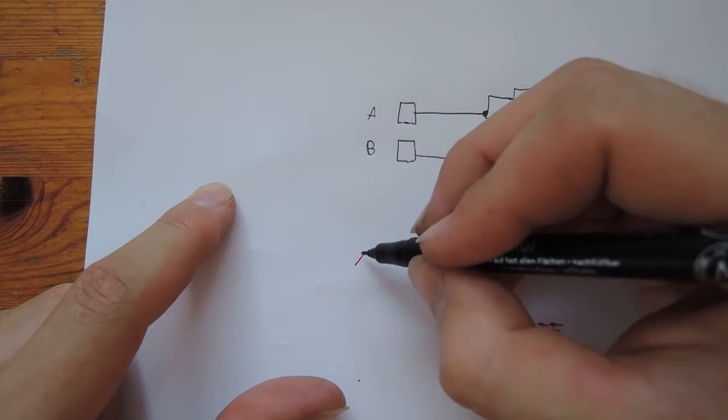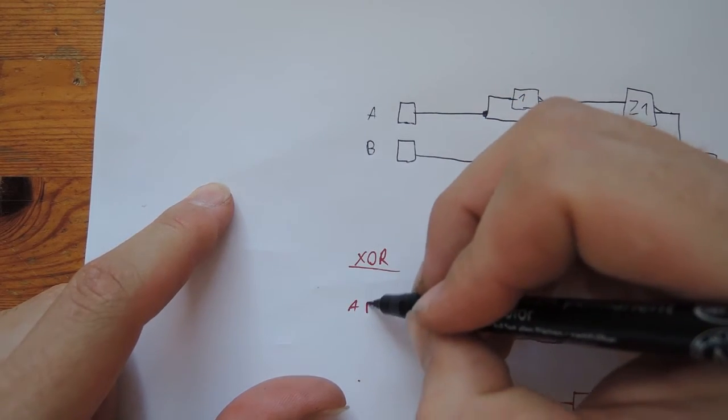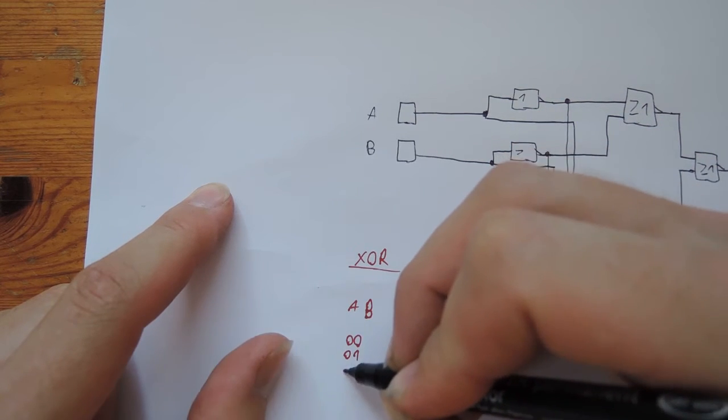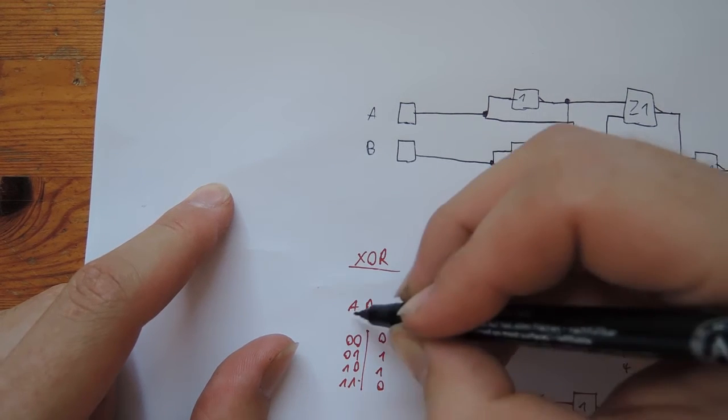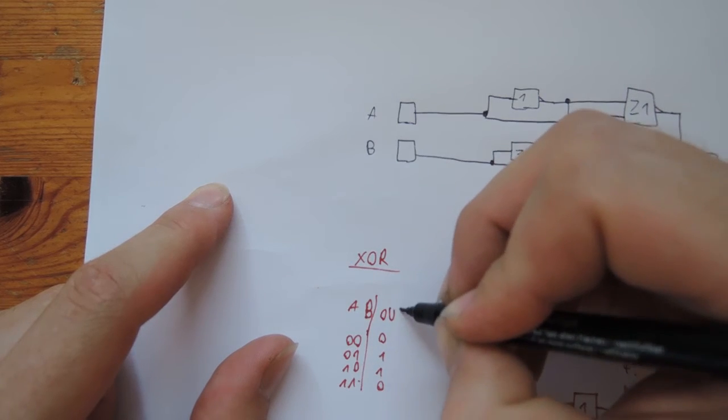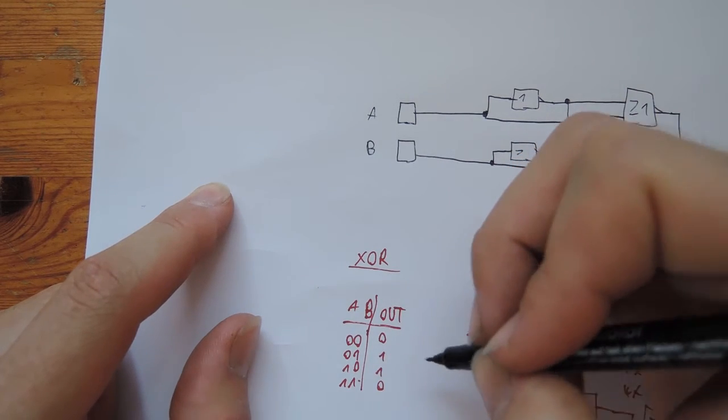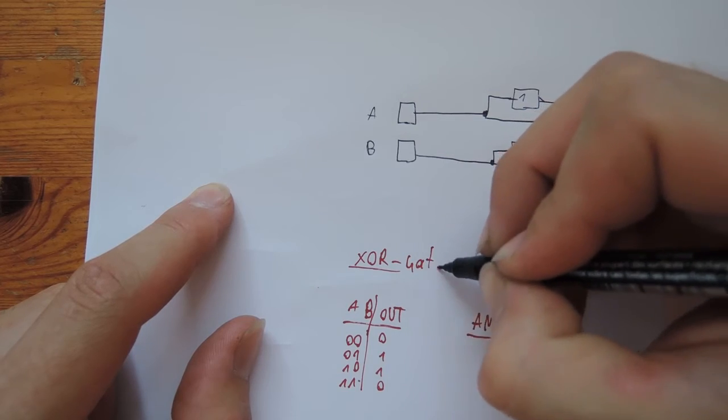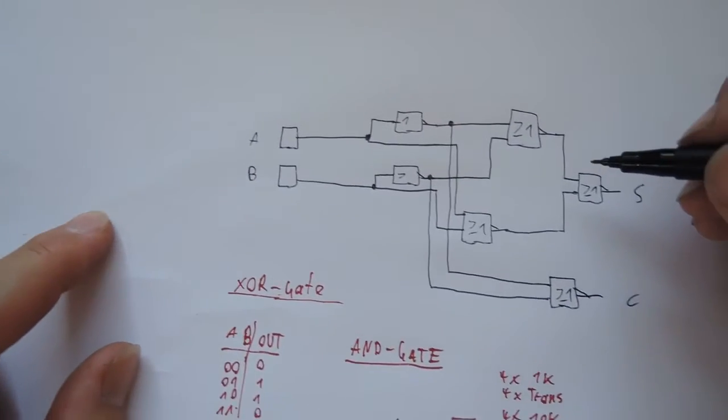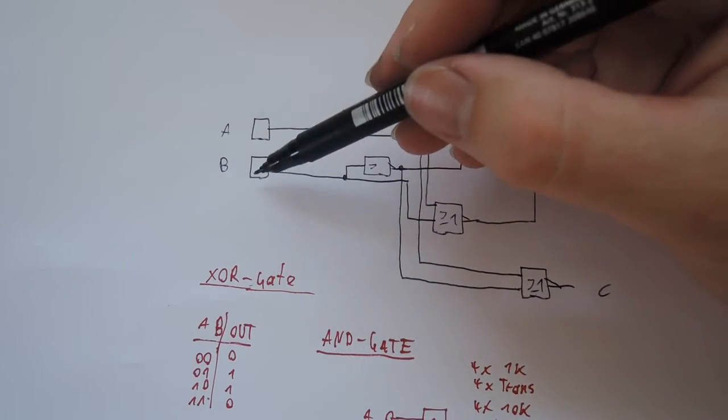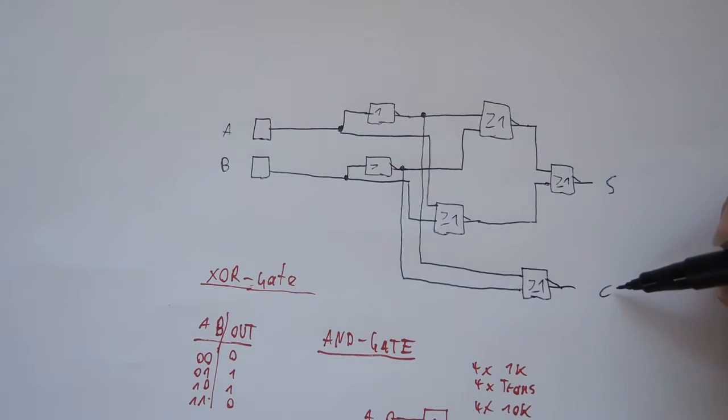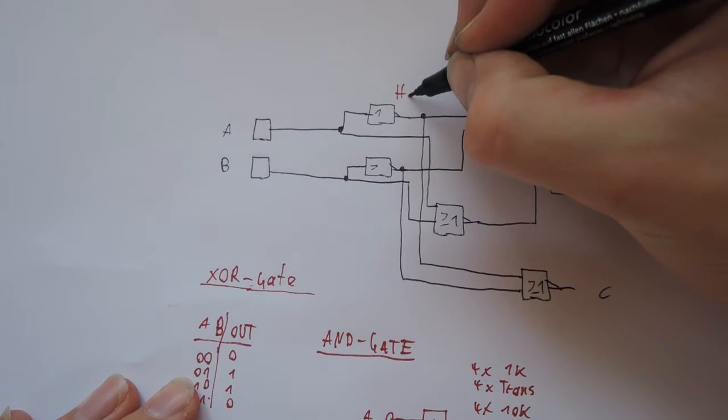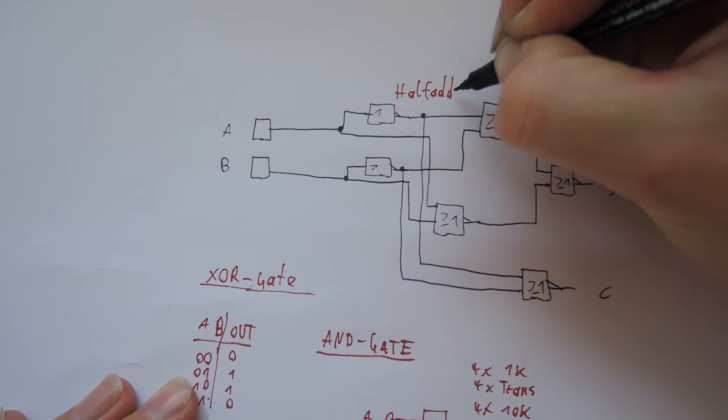And the other thing is an XOR gate. So when A is one and B is zero, here is one and zero. One, one, one is here and one, and here is zero. Yeah, that's the half adder.